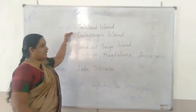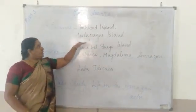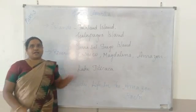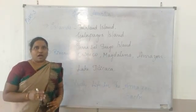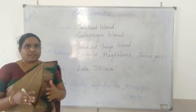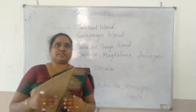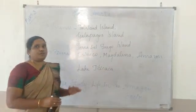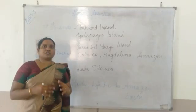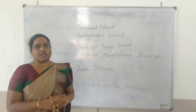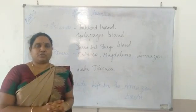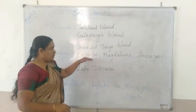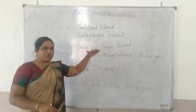So these are the three important island groups: Falkland Island, Galapagos Island, and Tierra del Fuego Island. Now coming to the second portion, the rivers of South America. There are so many rivers in South America. The first one is the Orinoco River in the north.